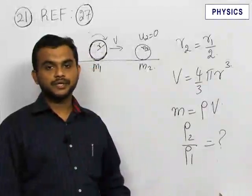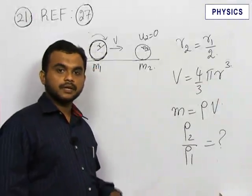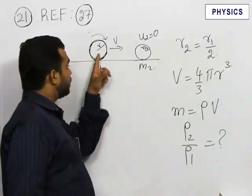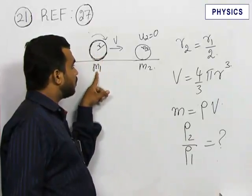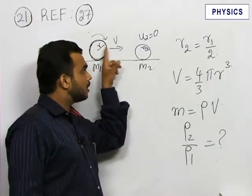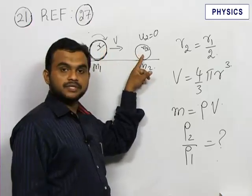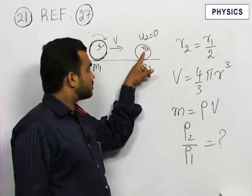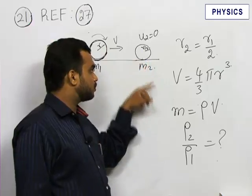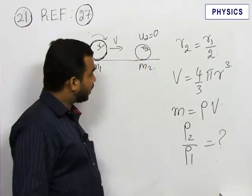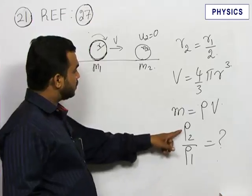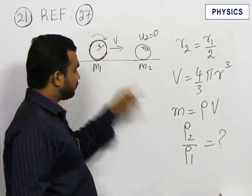Next, please refer to problem number 27. In this problem, a sphere of radius r and mass m1 moving with velocity v collides with another sphere at rest having radius r/2 and mass m2. We have to find the ratio of the densities of the second sphere to the first sphere.